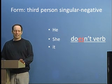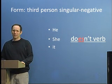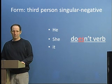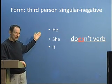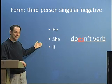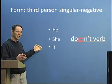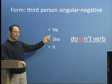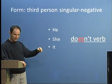We also need to handle the S whenever we use the negative for third person singular. So if the subject is he, she, it, a name, or a thing that's singular, and we want to make it negative, then we use 'doesn't' plus the verb.